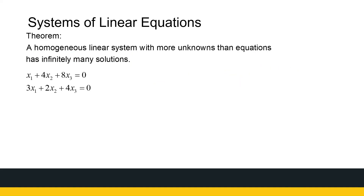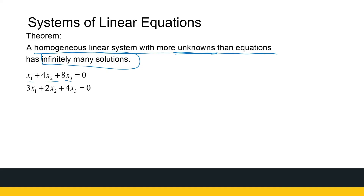A homogeneous linear system will always have at least one solution — the trivial solution — but it could have more, and it will never have no solutions. Furthermore, if I've got a homogeneous system with more unknowns than equations — say three unknowns and only two equations — that one will have infinitely many solutions. You can't get three leading ones because there aren't enough rows in the matrix, so this will generate an infinite number of solutions.